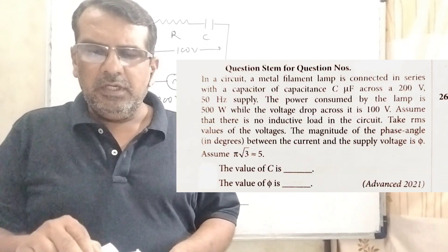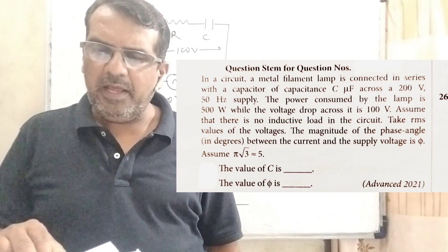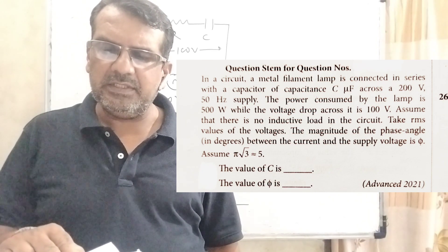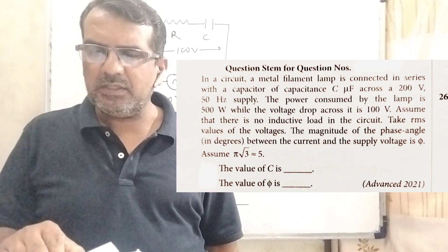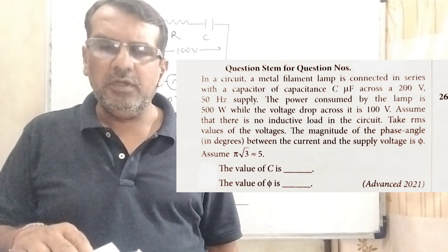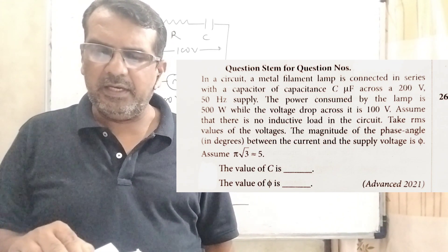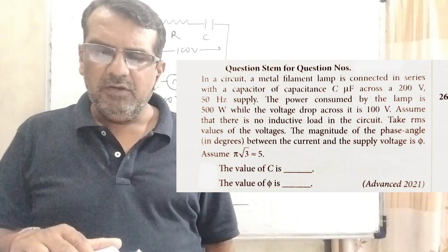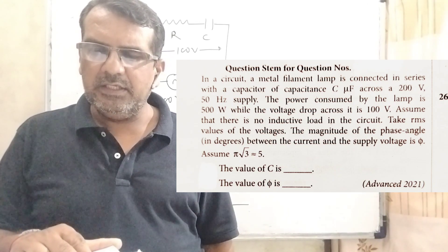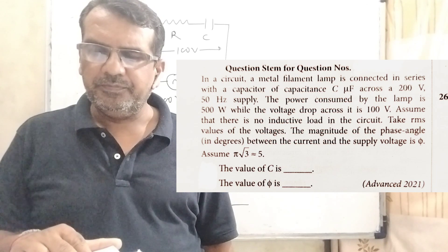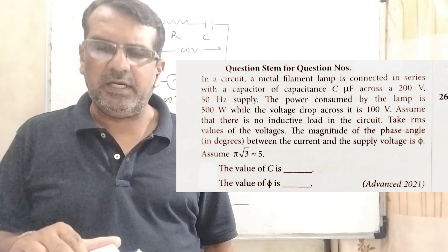Now here is the question. In a circuit, a metal filament lamp is connected in series with a capacitor of capacitance C microfarad across a 200 volt, 50 hertz supply. The power consumed by the lamp is 500 watt while the voltage drop across it is 100 volt. Assume that there is no inductive load in the circuit.